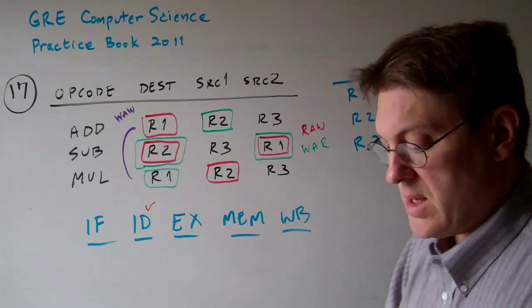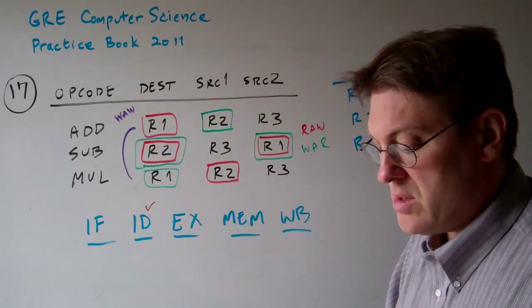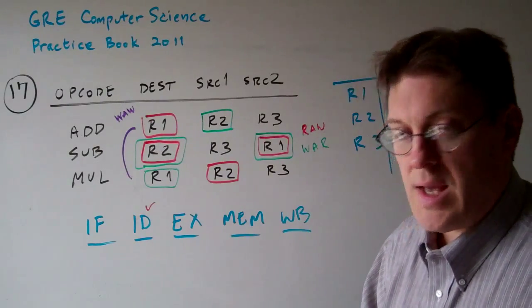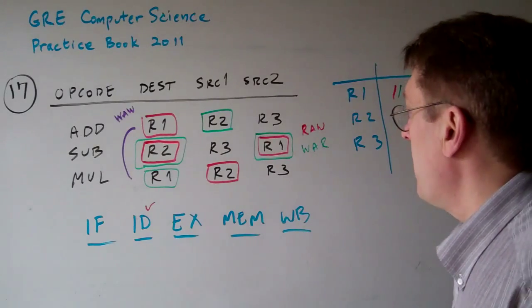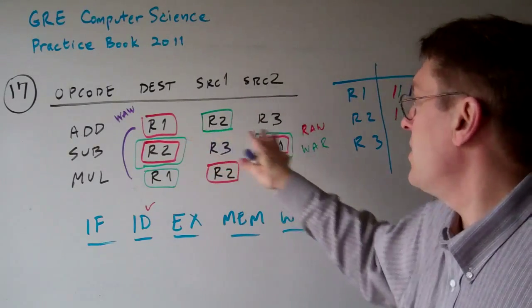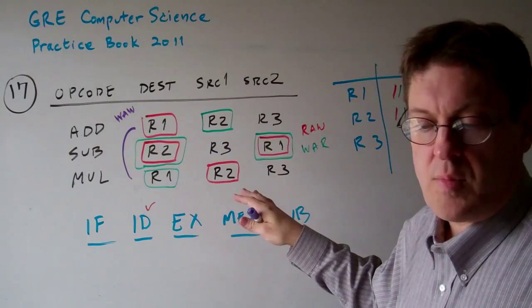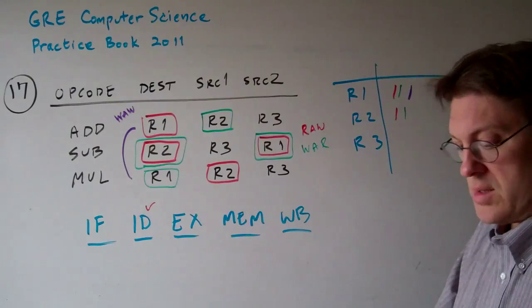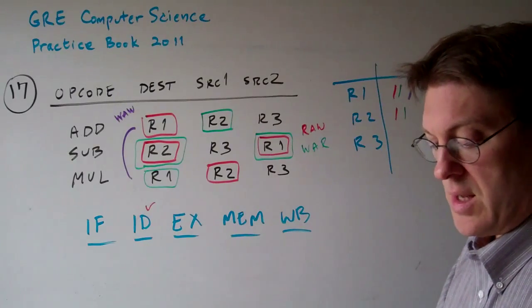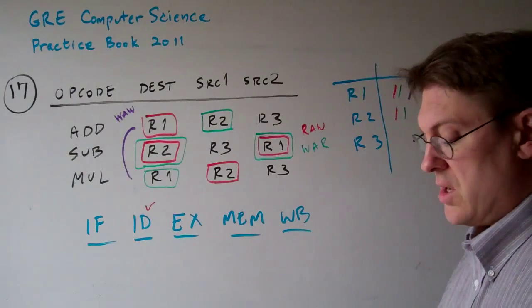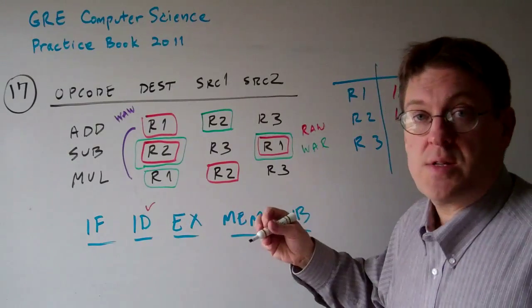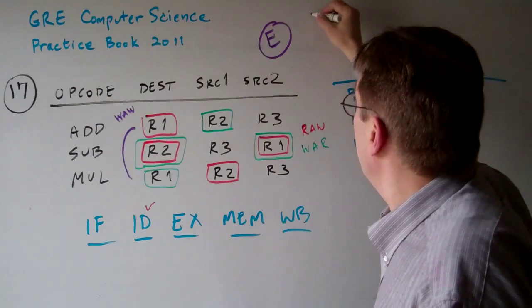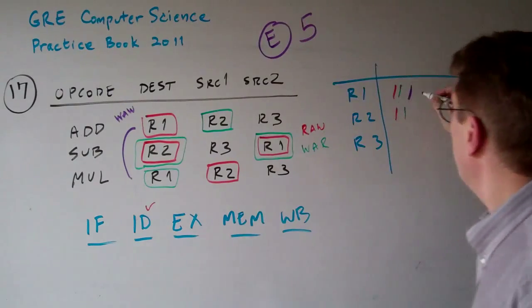Now the question says here, how many data hazards does the ID stage need to detect? We could say that there's three types of data hazard. But really, it doesn't say how many types of data hazards. It says how many data hazards. So the answer to question 17 is E, five. Five data hazards.